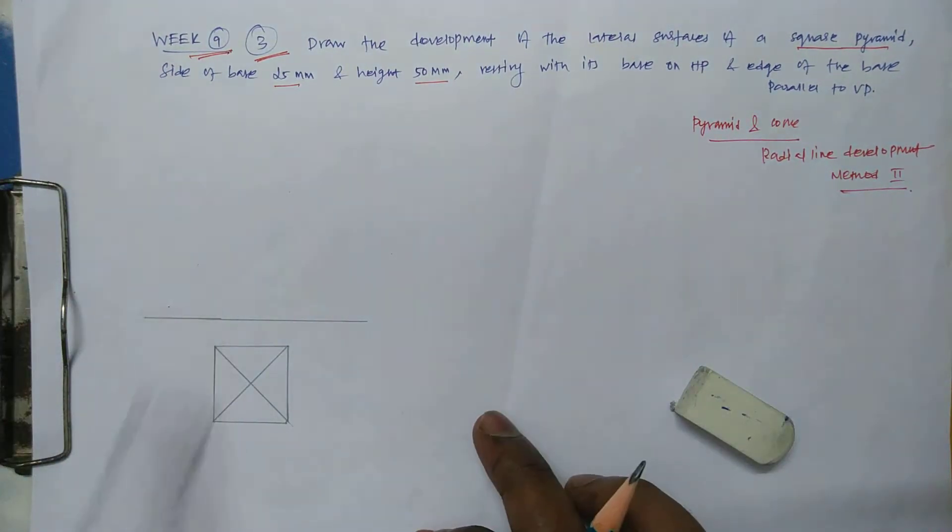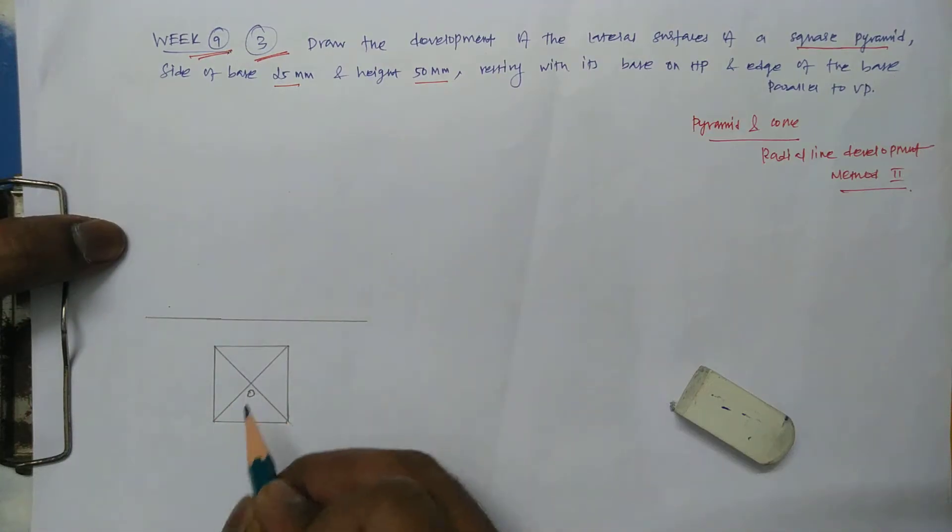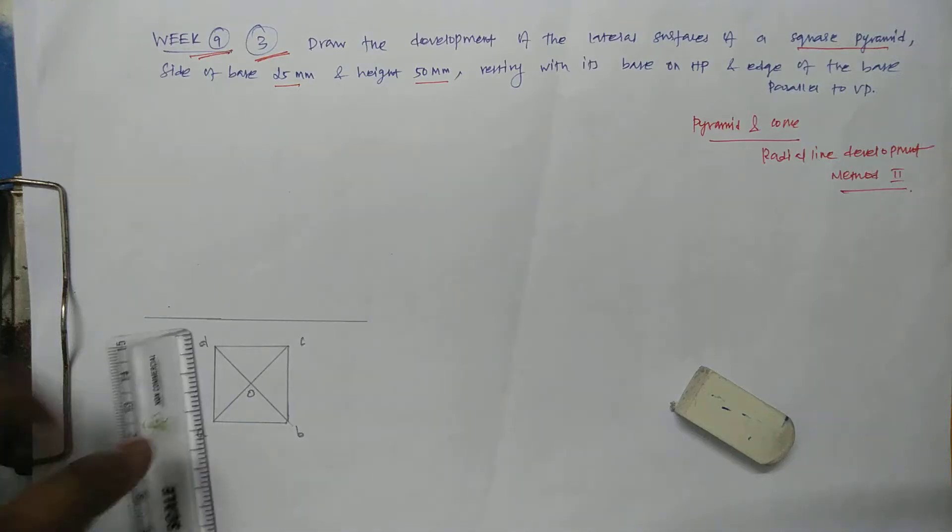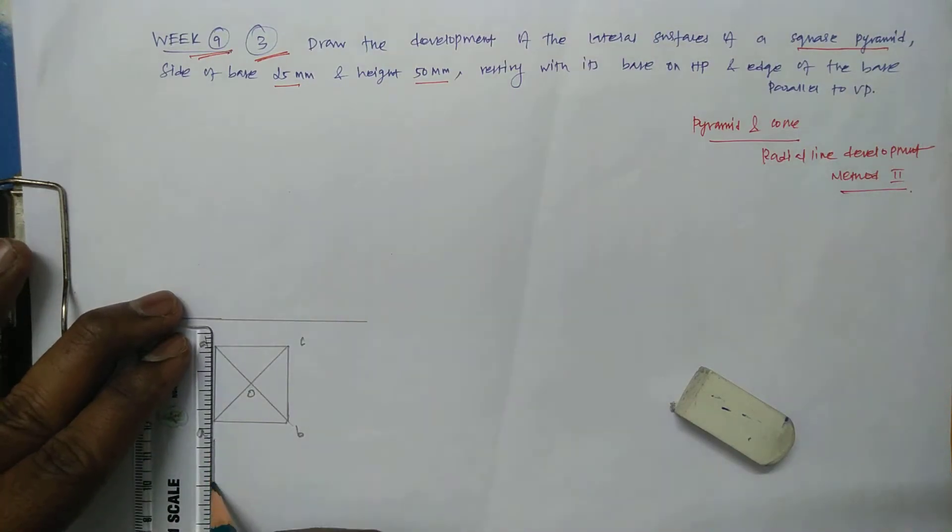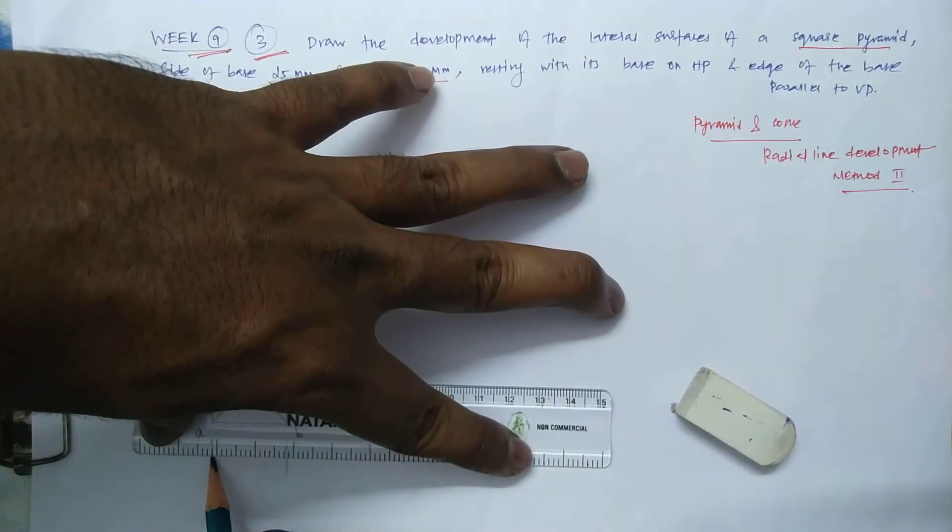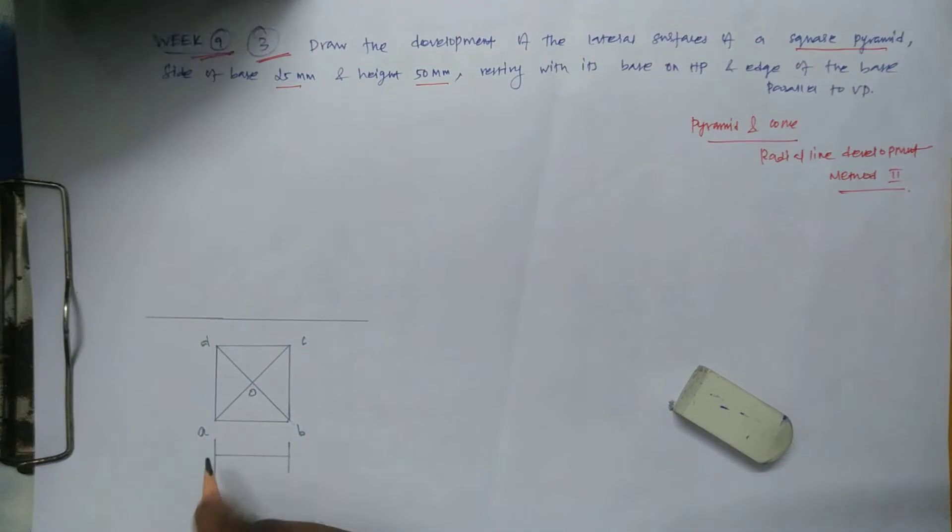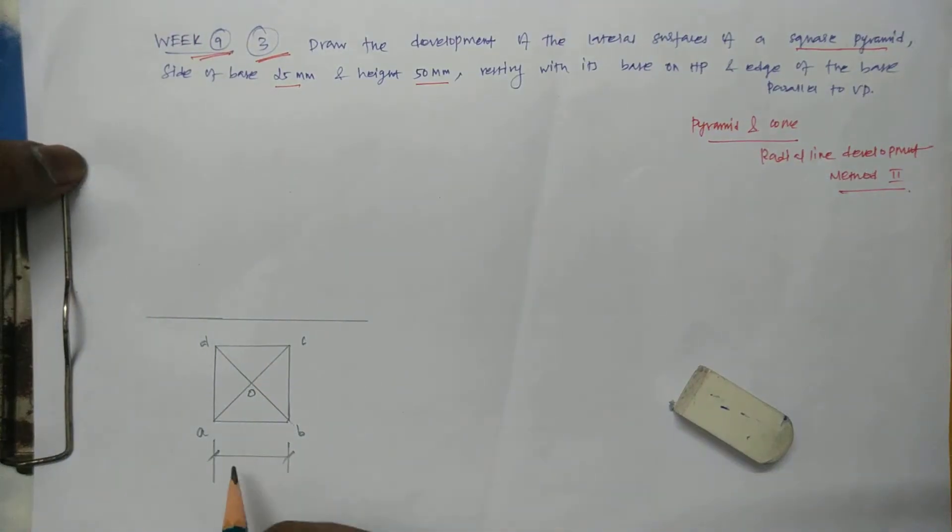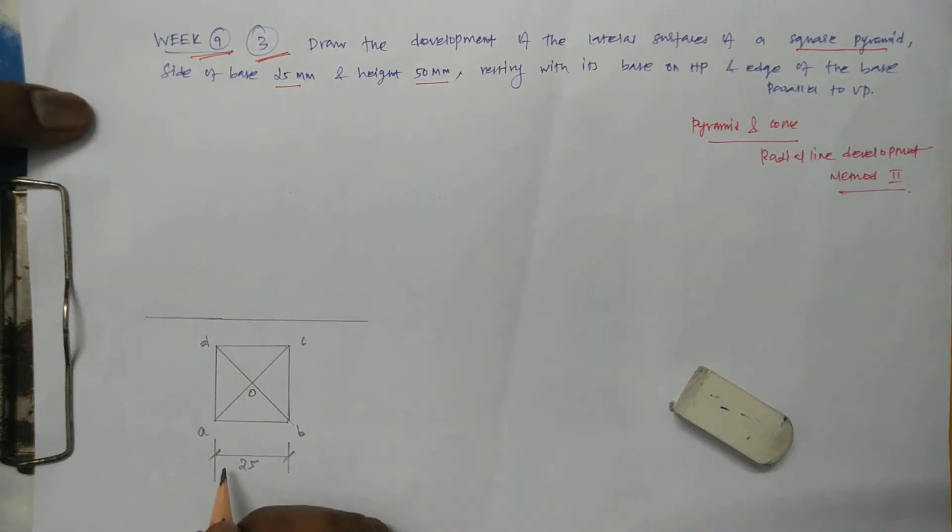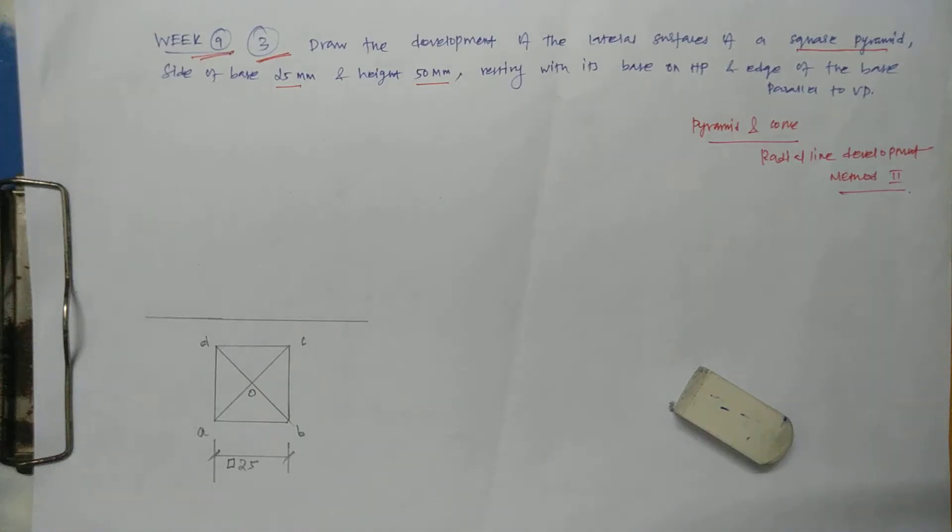So the point this is O, it could be apex and let it be A, B, C, D. Let it be 25mm square. You can show like this. It is a square.